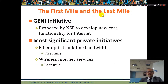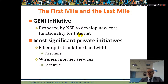The First Mile and Last Mile GENI initiative, proposed by the NSF, aims to develop new core functionality for the internet. It focuses on the most significant private networks, fiber optic trunk line bandwidth, first mile and wireless internet service for the last mile.